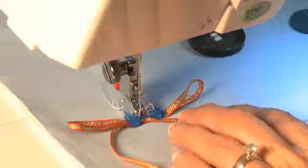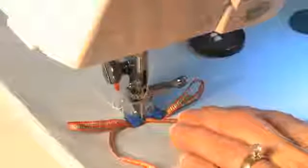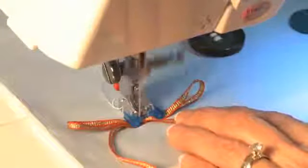Position the knot of the bow in the middle of the foot. Adjust your stitch width to narrow, and sew. To completely hide your stitching, you can use invisible thread.